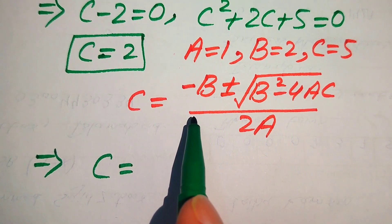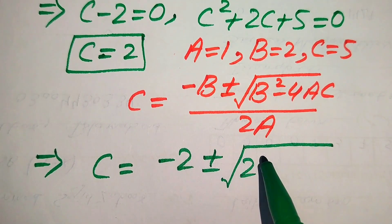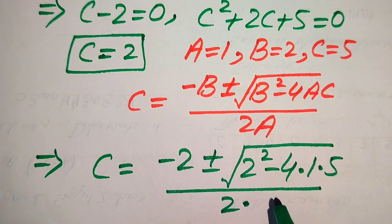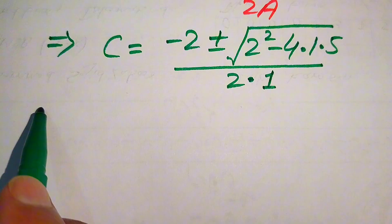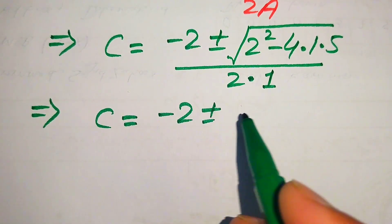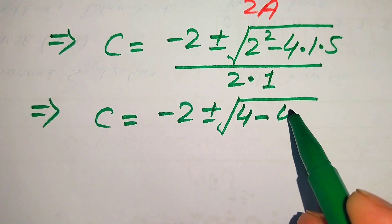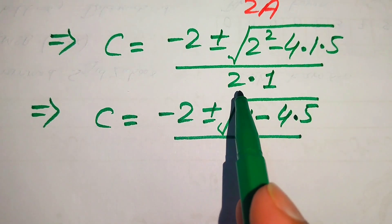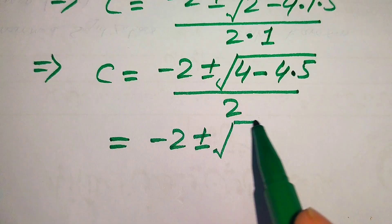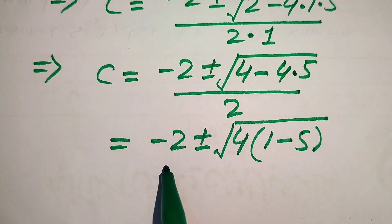Substituting the values: c equals minus 2 plus or minus square root of (2 squared minus 4 times 1 times 5) divided by (2 times 1). This simplifies to minus 2 plus or minus square root of (4 minus 20) divided by 2. Inside the square root we have 4 times (1 minus 5), so we take 4 as a common factor, giving minus 2 plus or minus square root of 4 times (negative 4), all divided by 2.